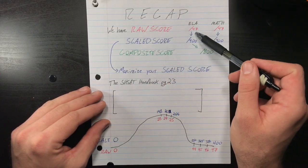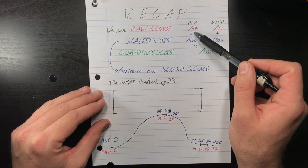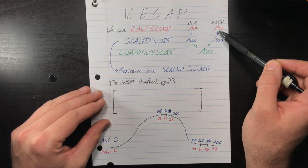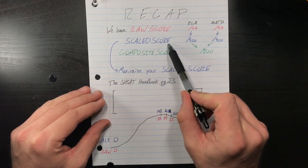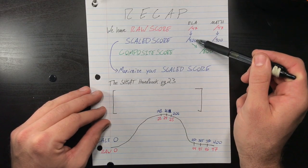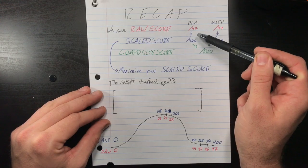Here's a quick recap to jog your memory. We have a raw score which is how many you get correct out of 47, and they take that for ELA and math. This is what you're used to seeing in school for scoring. Then we have a scaled score where they take that out of 47 and make it out of 400.